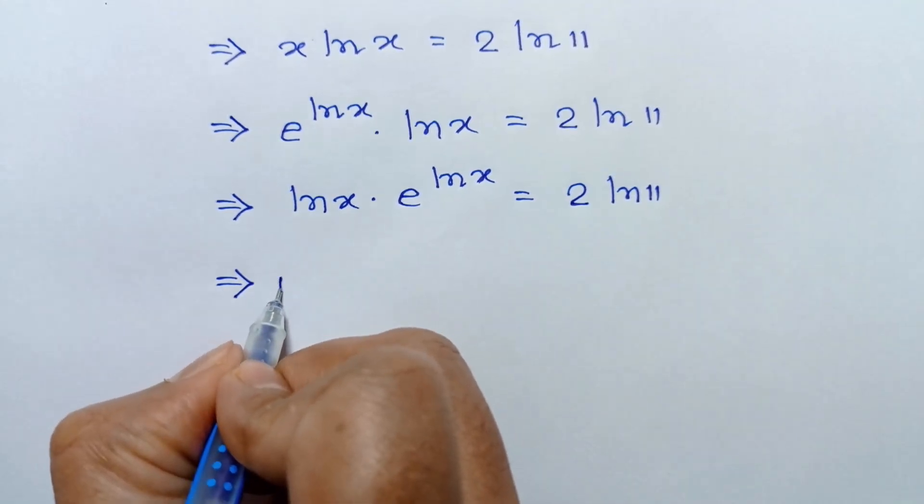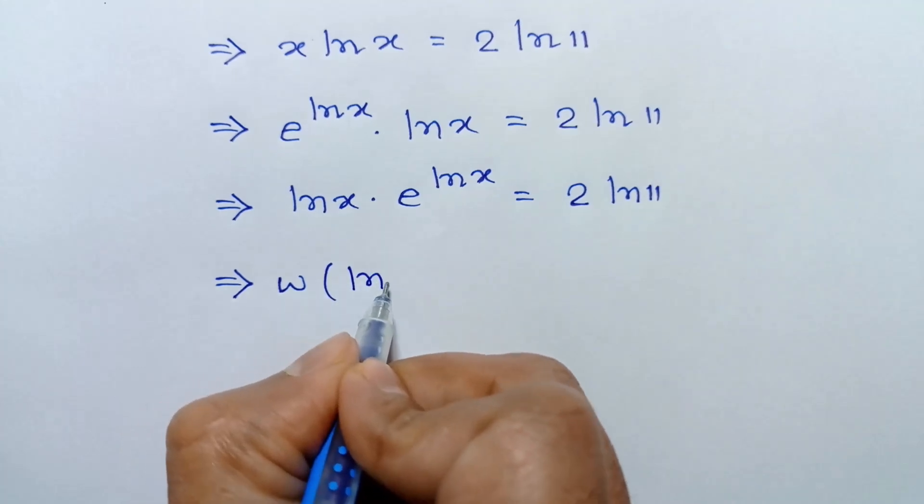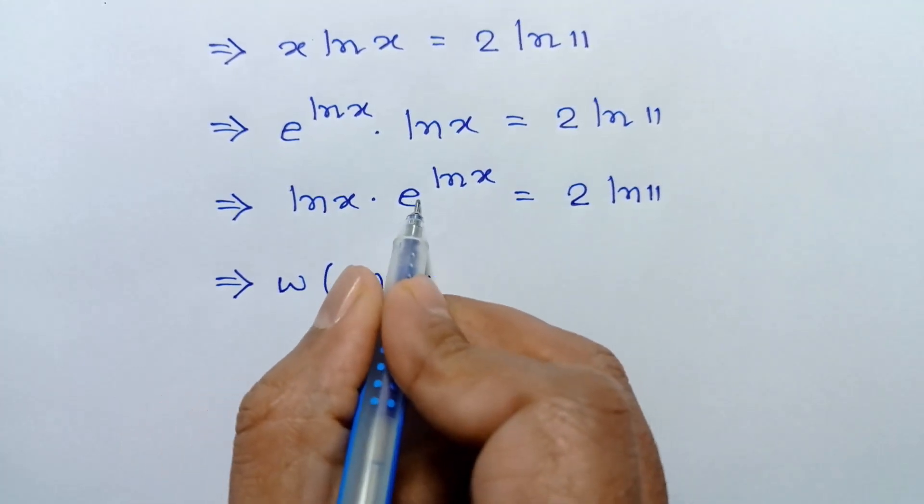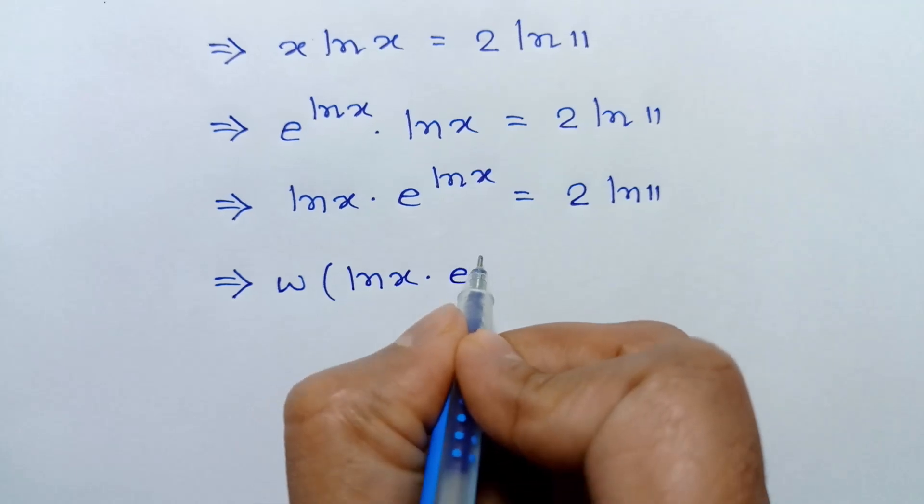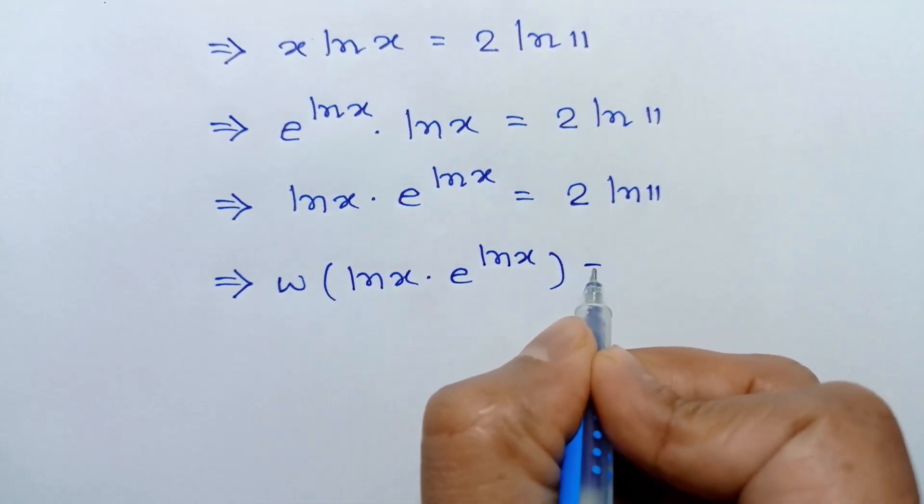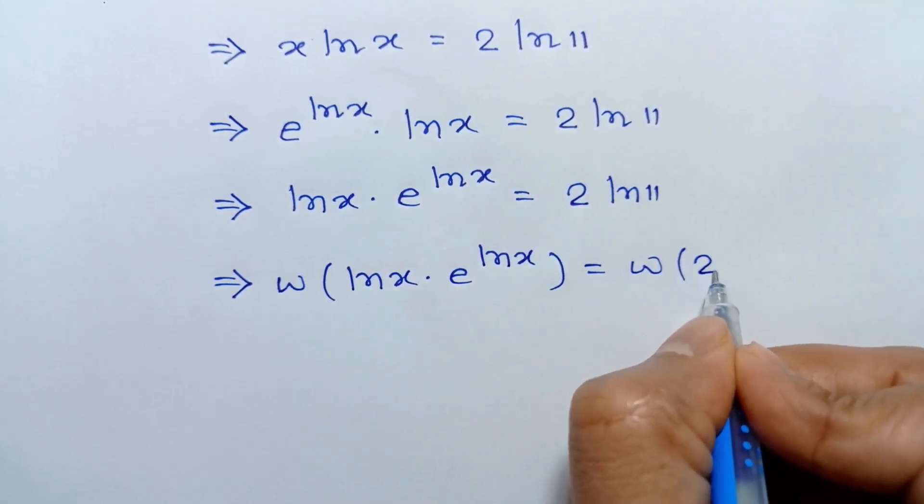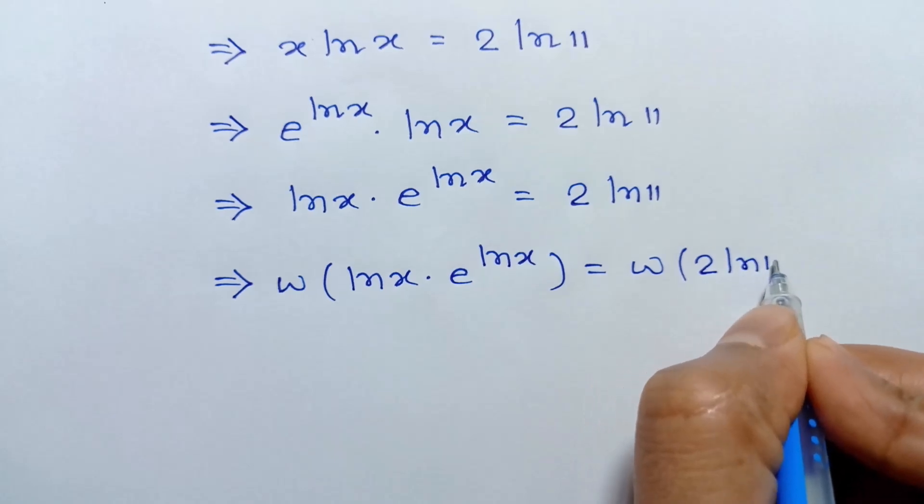We will have W of ln x times e to the power ln x equals W of 2 ln 11.